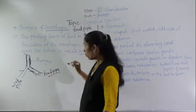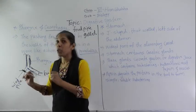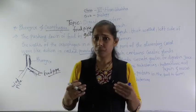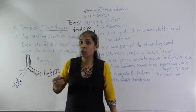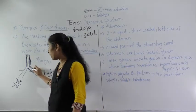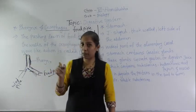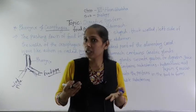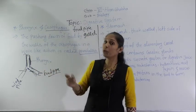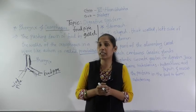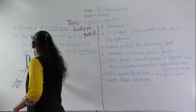The pharynx has two branches — the food pipe and the wind pipe. Sometimes we experience coughing or choking. This happens because when we are laughing or talking, food particles can enter the wind pipe by mistake instead of the food pipe, causing choking or coughing. To prevent food and air from mixing, at the end of the pharynx there is a flap-like portion called the epiglottis.